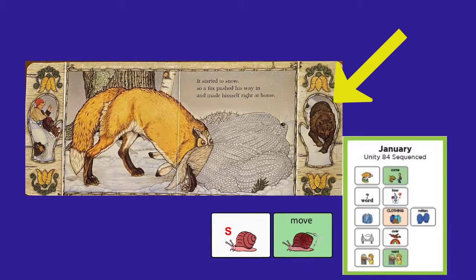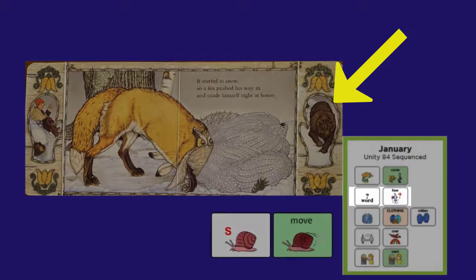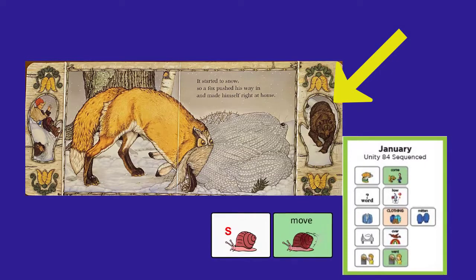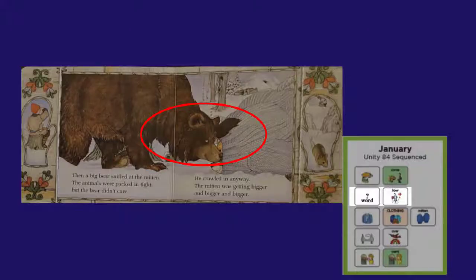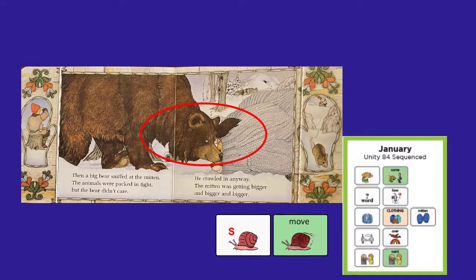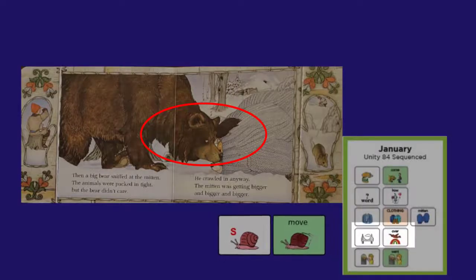Look what animal wants to come in next. How will he fit in the mitten? Then a big bear sniffed at the mitten. The animals were packed in tight, but the bear didn't care — he crawled in anyway. The mitten was getting bigger and bigger and bigger. How will that bear ever fit in that mitten? That mitten has stretched so big already. I don't think there's room in the mitten for another animal. I don't think they can move over anymore.